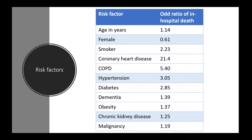Here's a table that shows the odds ratio of in-hospital death according to risk factors. If the odds ratio is more than one, it means that the factor is associated with increased risk of death in hospital. Age has an odds ratio of 1.14 and that increases by number of years. Female has an odds ratio of 0.61, so male is a risk factor of in-hospital death. Smoking also increases your risk of death, and in terms of comorbidities, they're arranged from highest odds ratio to lowest.